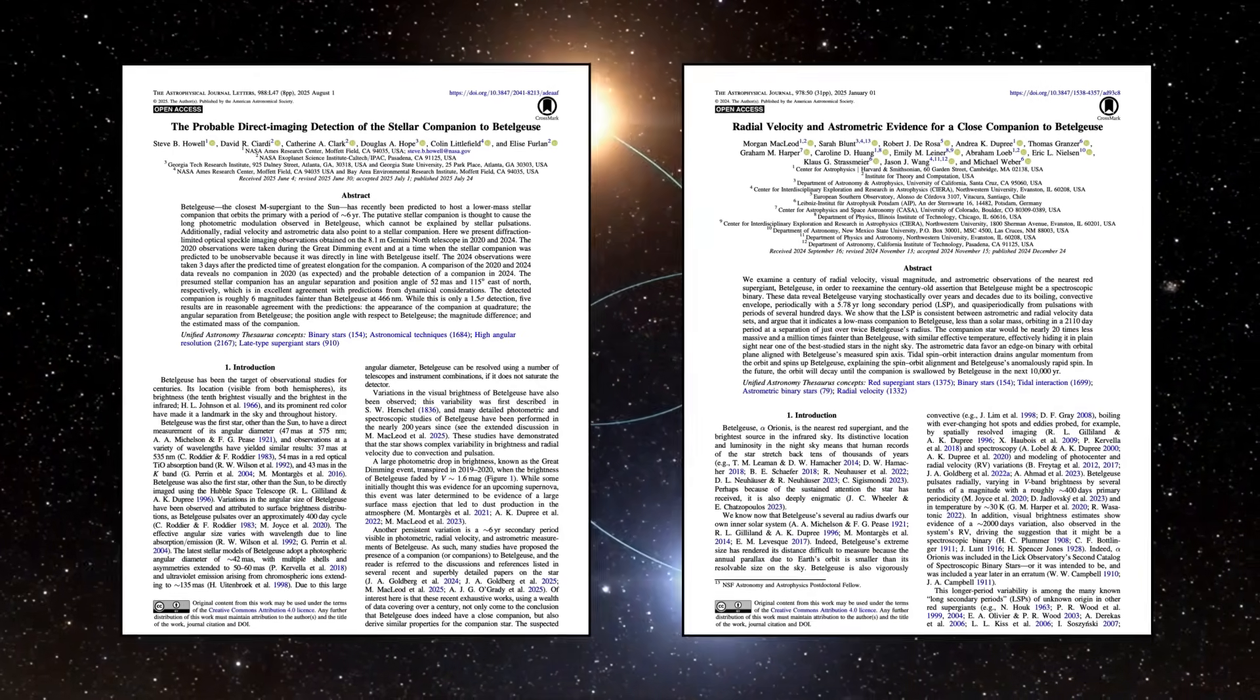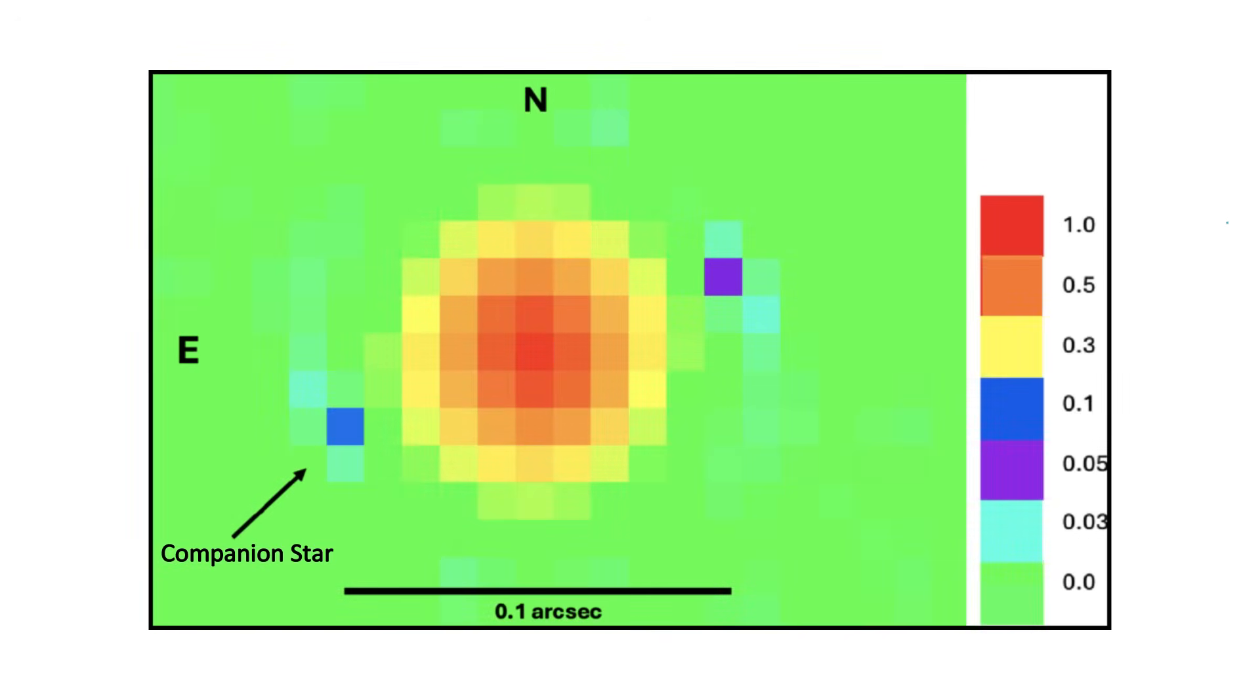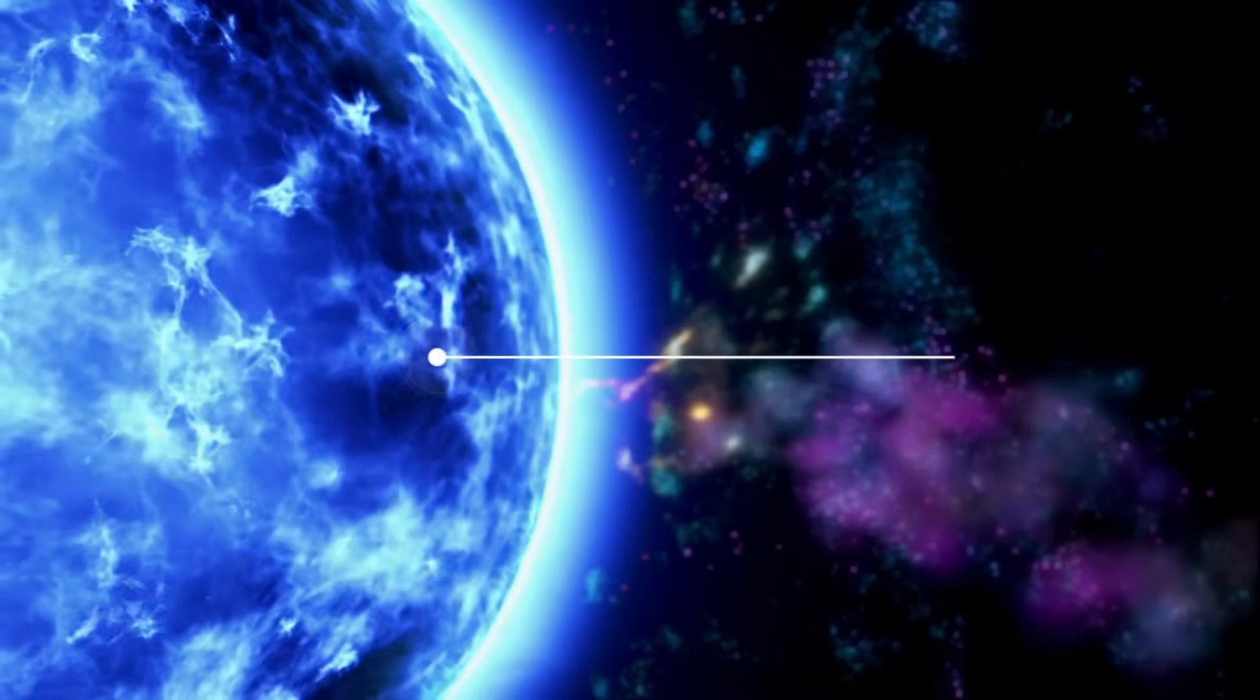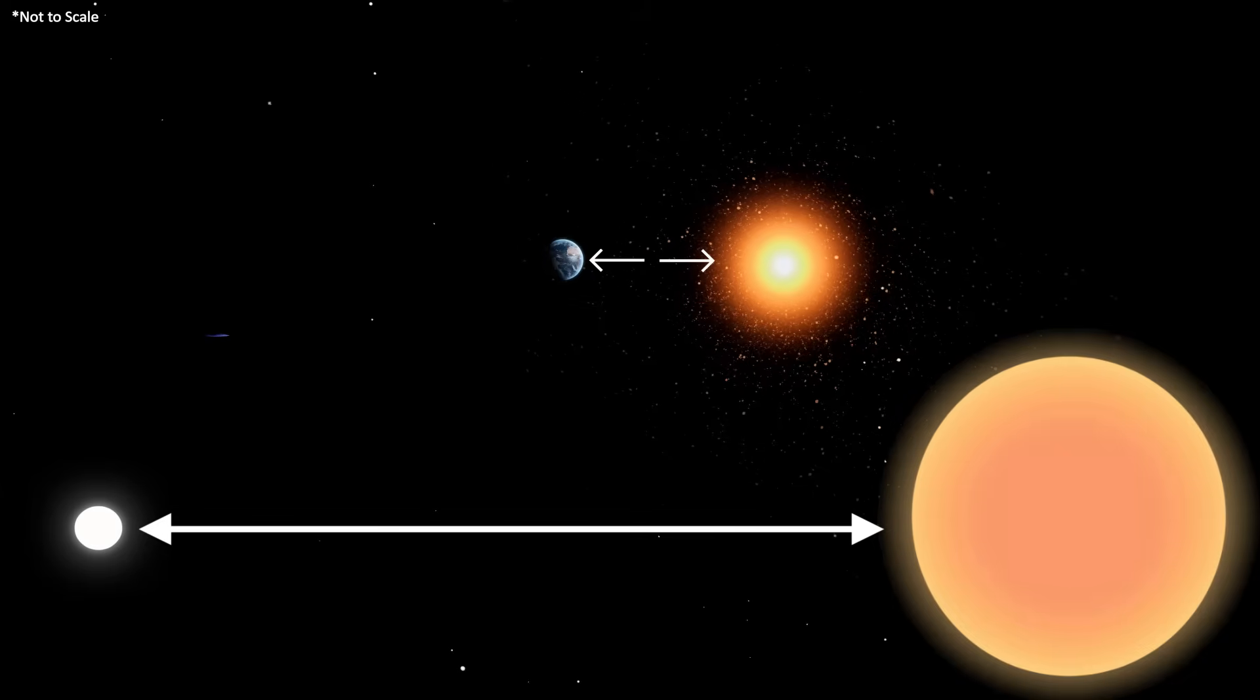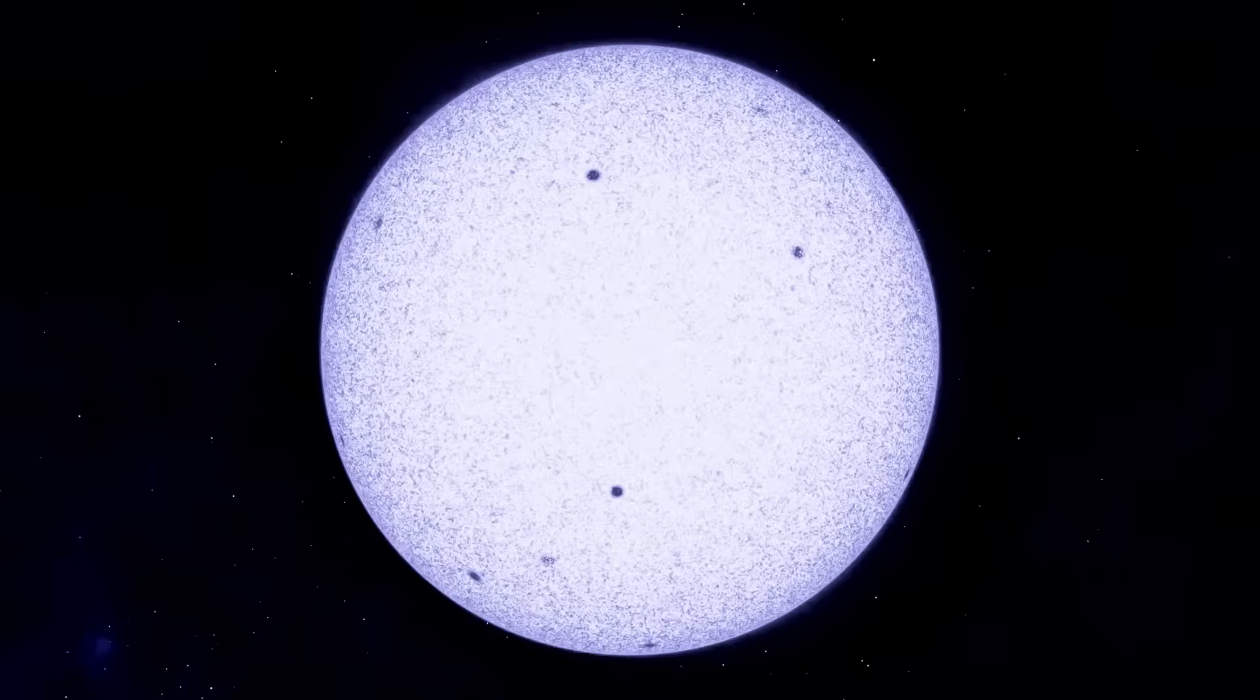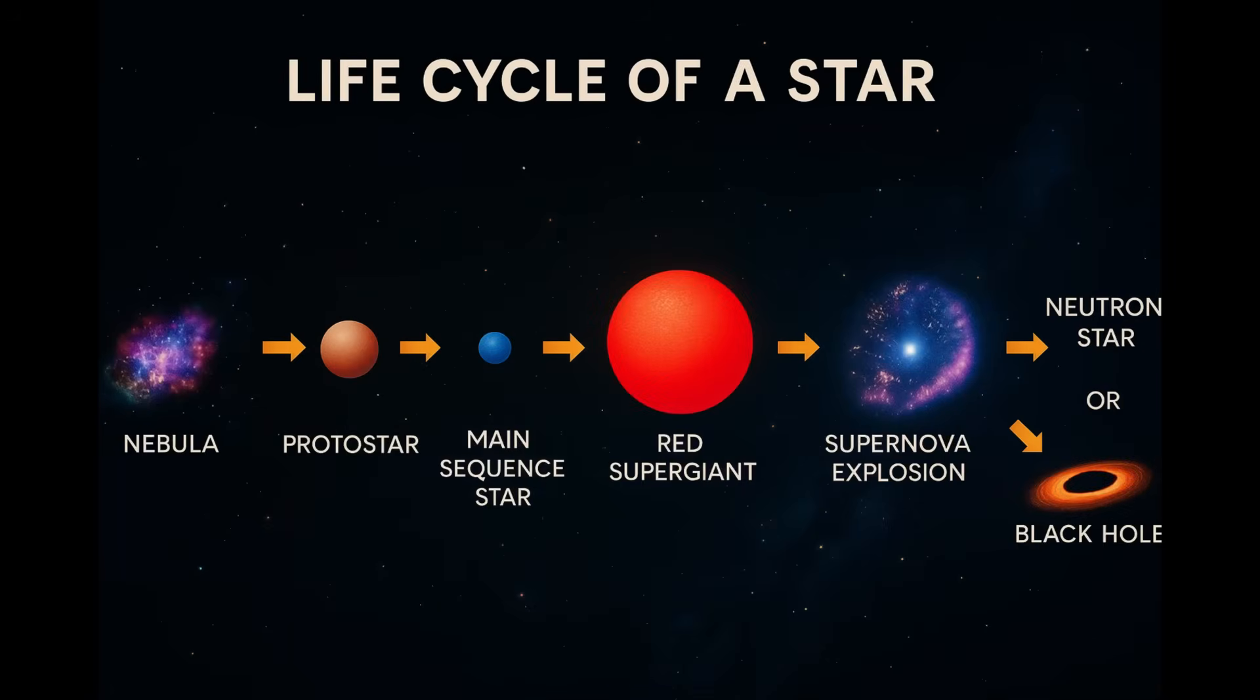The study papers have been published in the Astrophysical Journal letters and are linked in the description below. They found that the companion star is six magnitudes fainter than Betelgeuse in the optical wavelength range. It has an estimated mass of around 1.5 times that of the Sun, and it is a hot blue-white star orbiting the Red Giant at a distance equivalent to four times the distance between Earth and the Sun, fairly close for binary stars. That means it exists within the extended atmosphere of Betelgeuse.